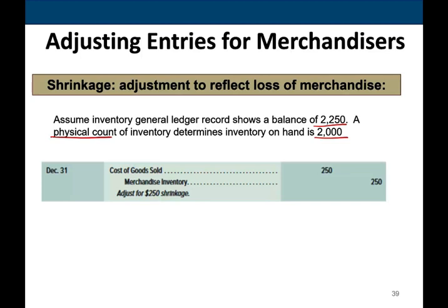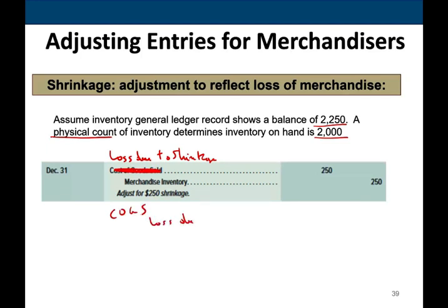Therefore we debit Cost of Goods Sold and credit Merchandise Inventory. In some textbooks, rather than debiting Cost of Goods Sold they debit a loss account called 'Loss Due to Shrinkage,' then close that account to Cost of Goods Sold. Here we are updating Cost of Goods Sold directly. If we debit Loss Due to Shrinkage earlier in the year, at year-end we debit Cost of Goods Sold and credit Loss Due to Shrinkage.